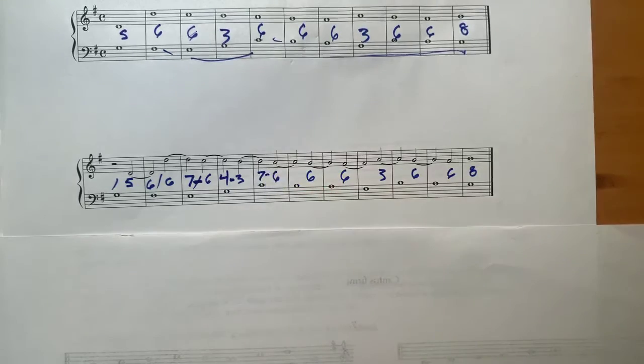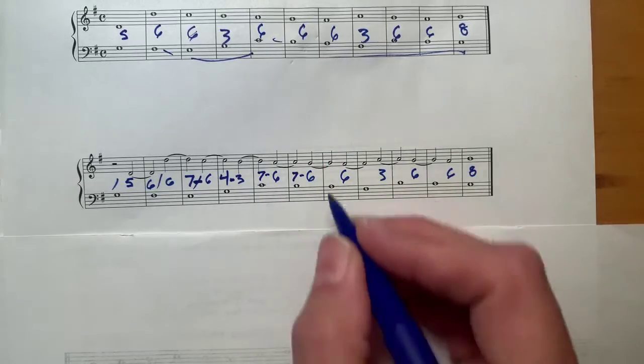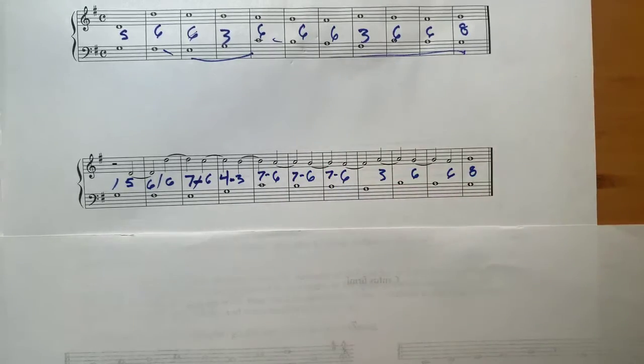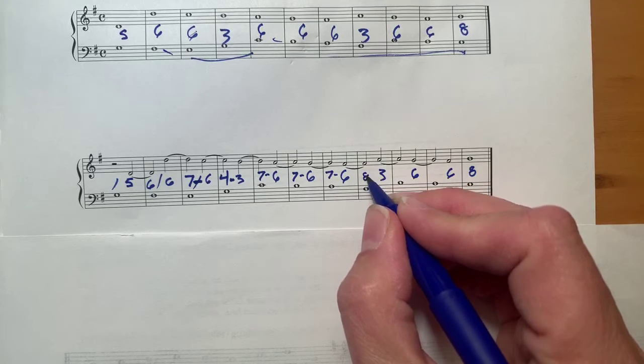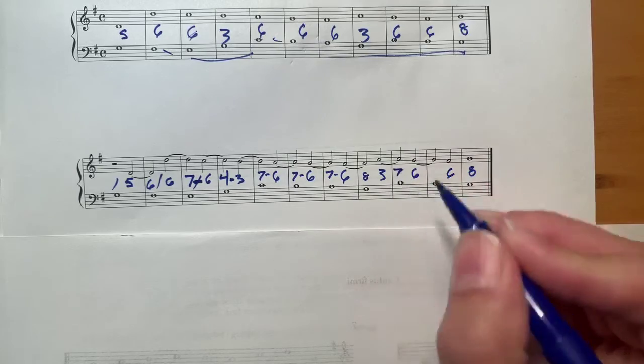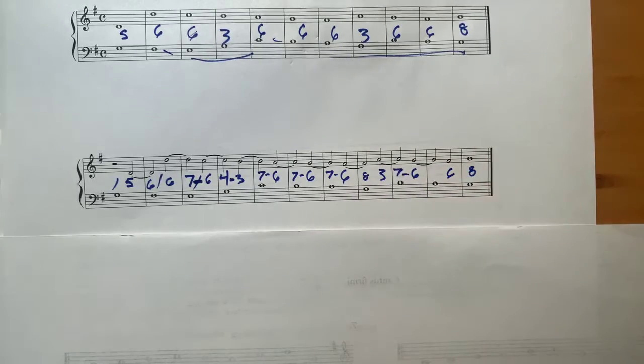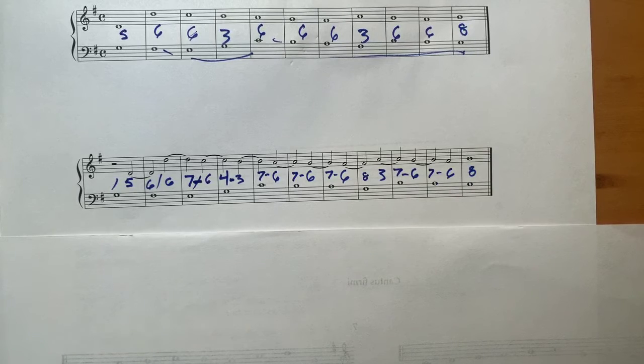A seven dissonance on the downbeat. Seven dissonance on the downbeat. And now right here, this is an octave. Consonance on the downbeat. Seven dissonance on the downbeat. Seven dissonance on the downbeat.